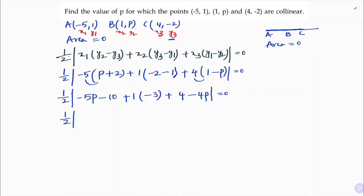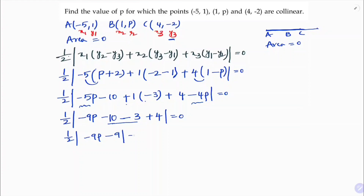Combining the p terms: -5p and -4p gives -9p. The remaining constants: -10 minus 3 plus 4 equals -9. So we have half mod (-9p - 9) equals 0. Cross multiplying by 2: mod(-9p - 9) equals 0, so -9p - 9 equals 0.